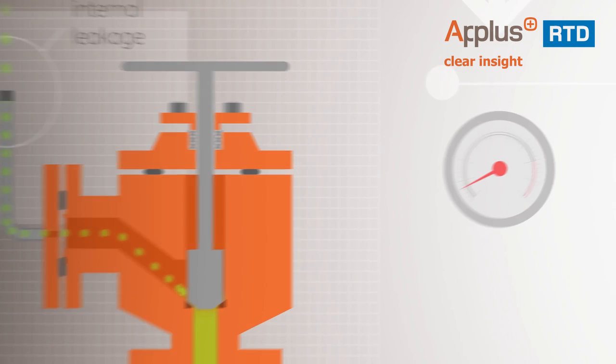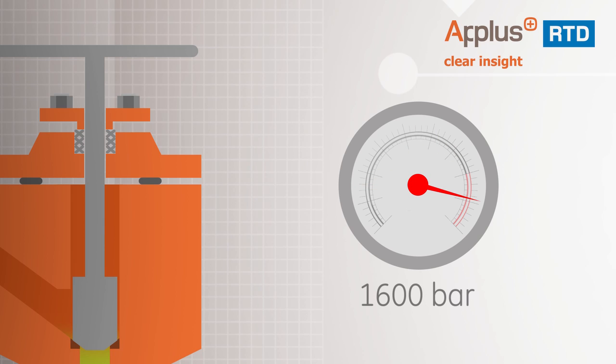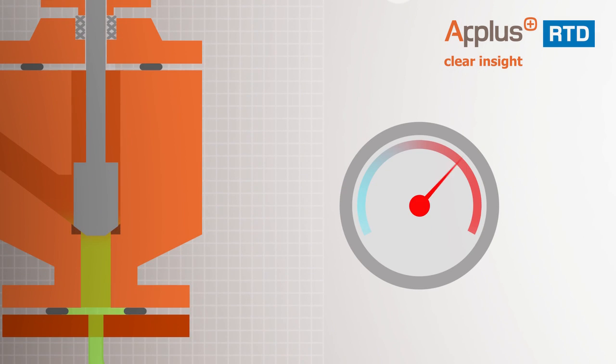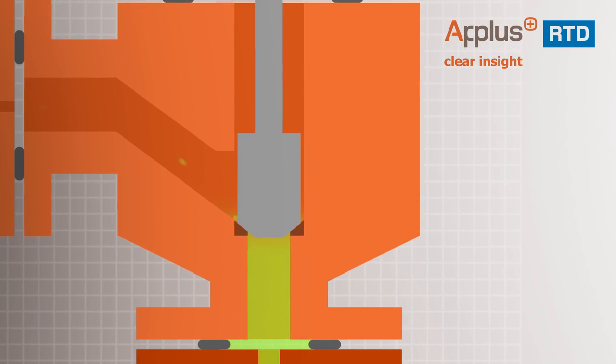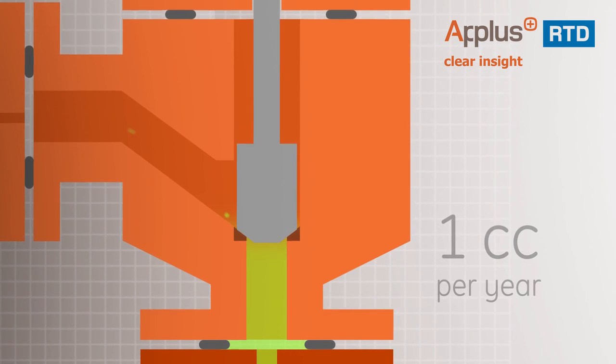Within our secure high-pressure bunker, extreme circumstances can be created. By controlling pressure and temperature, we can mimic, for example, the conditions of a control valve during operation. Our measuring equipment is so accurate that we can discover leakage of up to 1 cc per year.